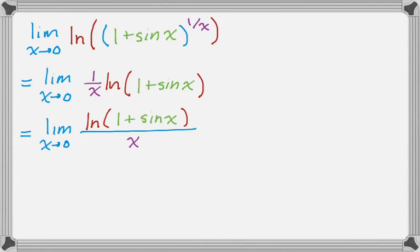And now, if I take the limit, I get the natural log of 1, which is 0. And then x is approaching 0, so x approaches 0. So, I have 0 over 0. Now, I have a L'Hopital's situation. So, I'm going to use L'Hopital's rule on it.